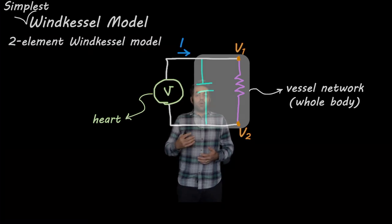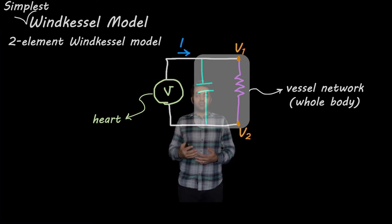It is called a two-element Windkessel model. There are more complex Windkessel models consisting of three elements and four elements.